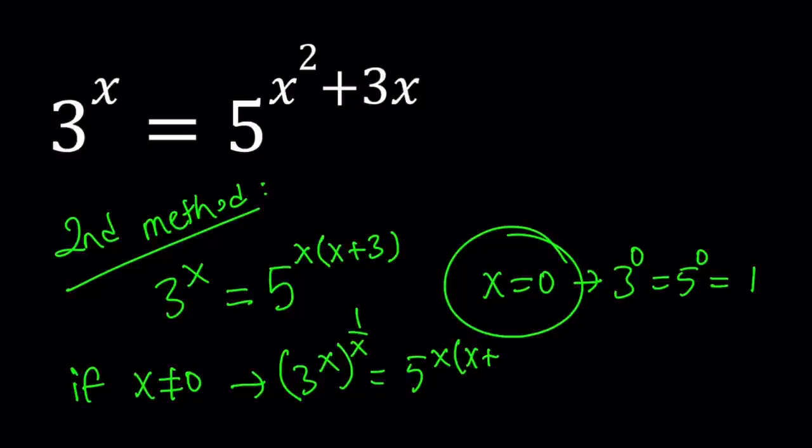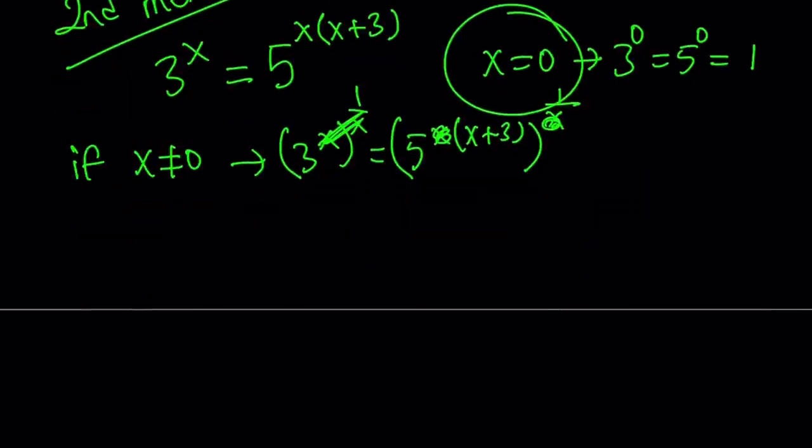We're going to get rid of x, in other words. You can definitely just cancel out the x's, even though it's not very rigorous or technical. But it's the same thing. x cancels out. And we end up with the following: 3 to the power 1, which is 3, equals 5 to the power x plus 3.